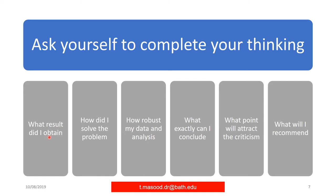Continuing the thinking elements: seventh, what results did I obtain during my investigation? Eighth, how did I solve the problems to deliver the results? Ninth, how robust is my data and analysis? Data confidence is very important — the confidence level on data accuracy. If your data is not accurate, you cannot achieve your results. Tenth, what exactly can I conclude? Eleventh, what points will attract criticism or open corridors for further research? Twelfth, what will I recommend during my investigation to improve what I have planned to do?